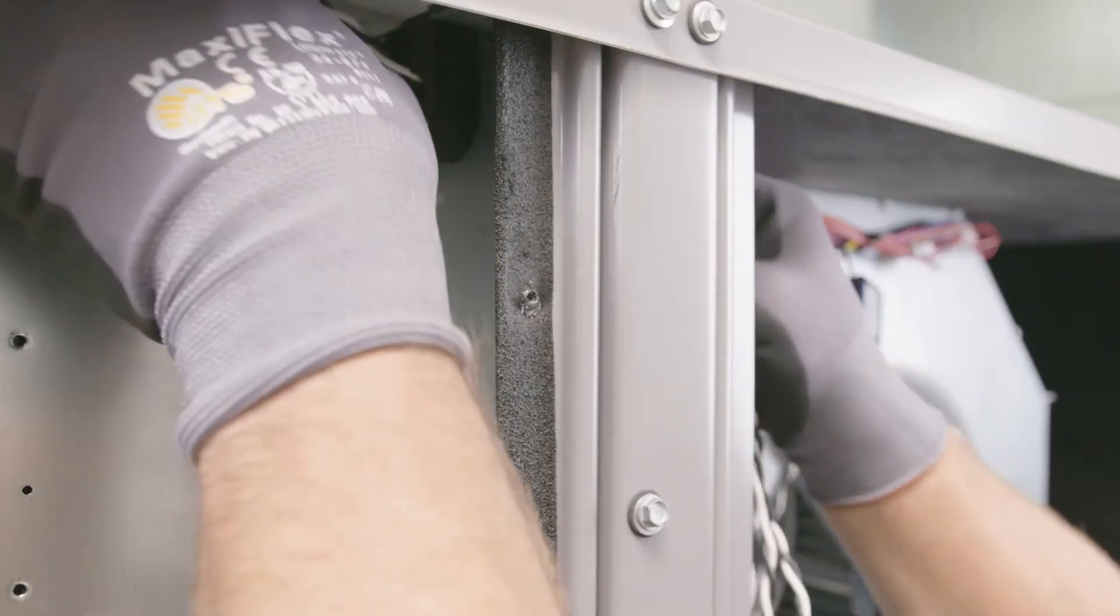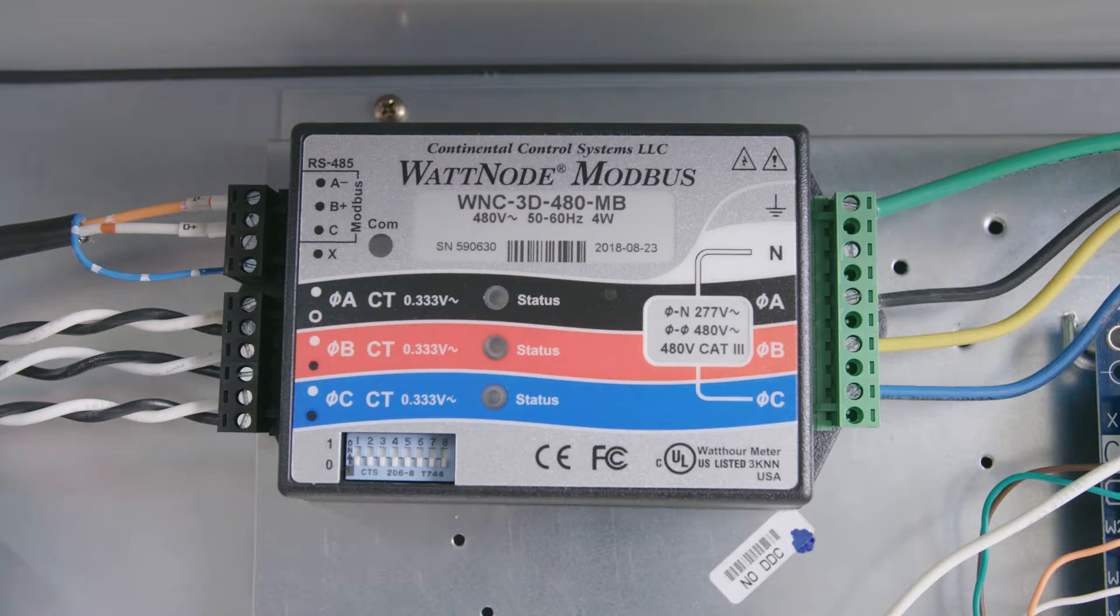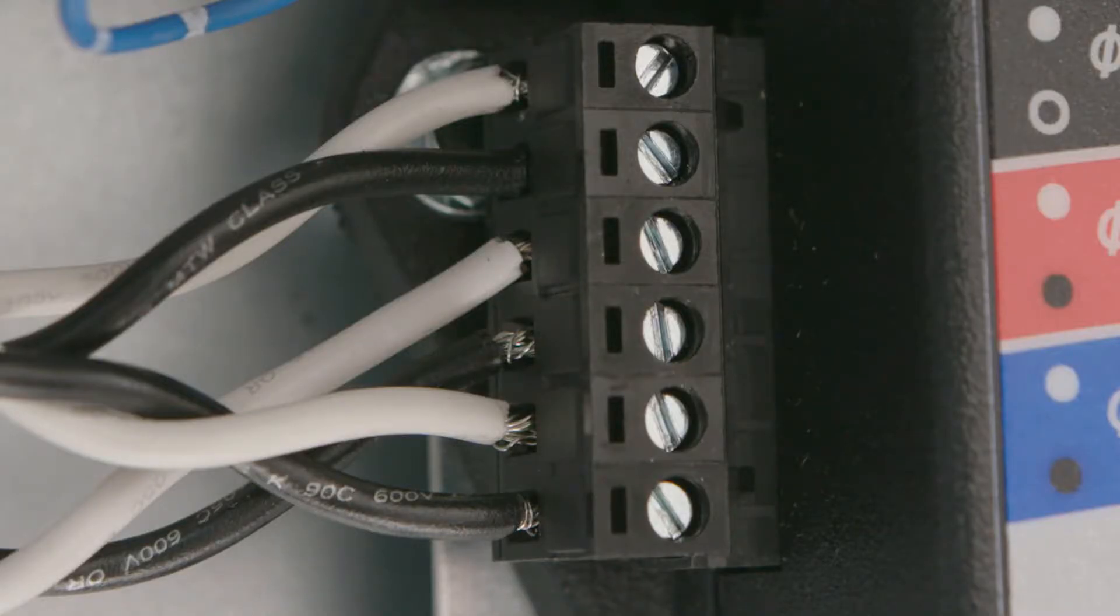Next, run the wire across the control panel to the power meter. Finally, connect it to the A, B, and C phase terminals. Again, white on top and black on the bottom.